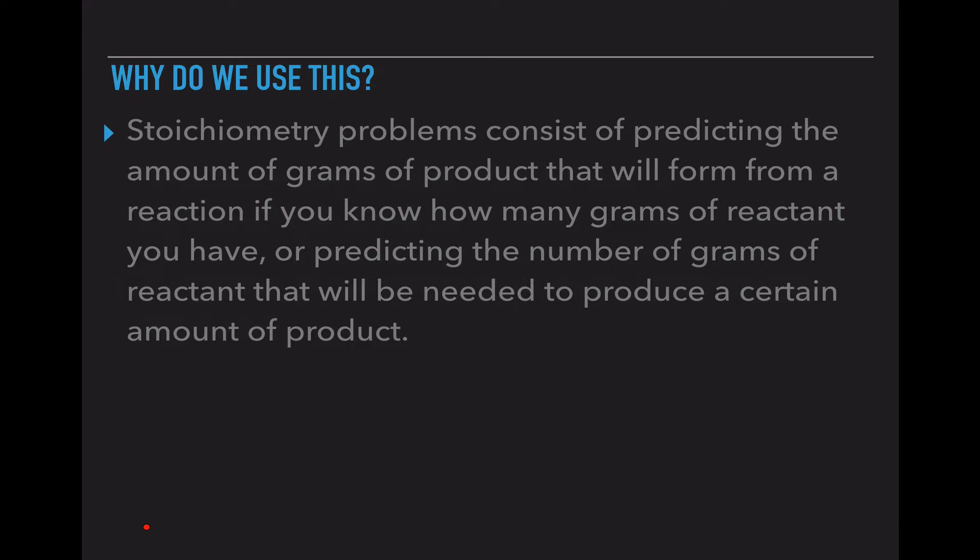So stoichiometry problems consist of predicting the amount of grams of product that will form from a reaction if we know how many grams of reactant we have. Or we will be predicting the number of grams of reactant that will be needed to produce a certain amount of product. So again, it's like a recipe. If I only have two eggs, how many cupcakes can I make? Or if I need 48 cupcakes, how many eggs should I start with? So that's the whole idea. But we're going to be using chemical formulas instead of real-life food things.